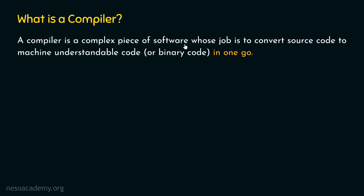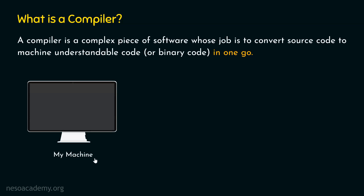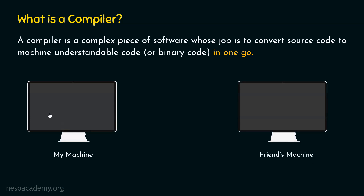A compiler is a complex piece of software whose job is to convert source code — that is, code we humans can understand — to machine-understandable code, or binary code, in one go. To demonstrate how a compiler works, let's say this is my machine and this is my friend's machine. In my machine, I have written a C programming code: hash include stdio.h, int main, int sum, a equal to 10, b equal to 20, sum equal to a plus b, and then a printf function to print sum on the screen. We know that a is 10 and b is 20, so the sum must be 30.